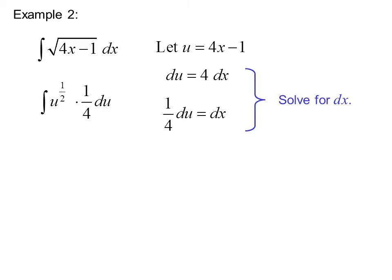And substitute, now we have the integral of u to the 1 half times 1 fourth du. Or 2 thirds u to the 3 halves times 1 fourth plus c. And we still have to remember, substitute back in. So we get 1 sixth times 4x minus 1, quantity to the 3 halves plus c.